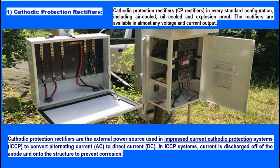Cathodic Protection Rectifiers are the external power source used in Impressed Current Cathodic Protection Systems (ICCP) to convert alternating current (AC) to direct current (DC). In ICCP systems, current is discharged off the anode and onto the structure to prevent corrosion. CP Rectifiers are available in every standard configuration including air cooled, oil cooled, and explosion proof, in almost any voltage and current output.